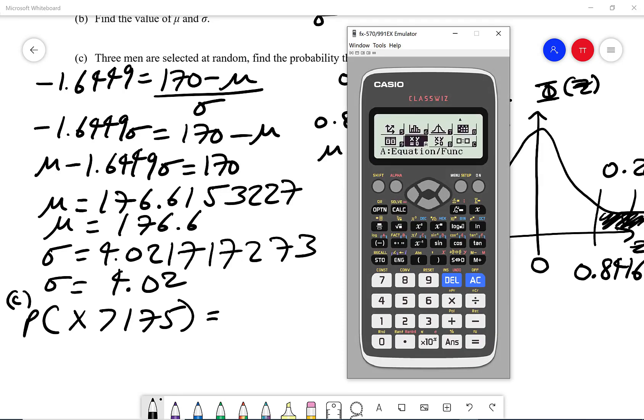Now so what I'm going to do is go back to the main menu, which is option seven number two, and say the lower limit is going to be 175, the upper limit is we're going to call a million, which is really representing positive infinity. Now we have to be careful that the standard deviation, write the true value out, is 4.021717273, and that the mean is 176.6153227, and then I press equals. That will give me 0.656 and so on.